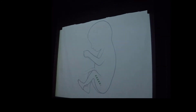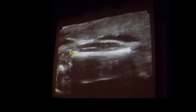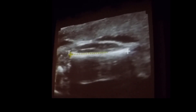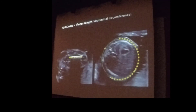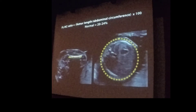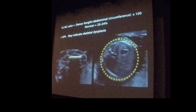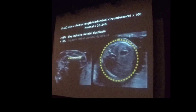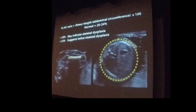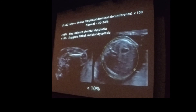The femur is measured along its shaft. The femur length is measured from diaphysis to diaphysis along the long axis of the shaft; only the ossified portions are measured. The ratio of femur length to abdominal circumference normally ranges from 20 to 24%. If the ratio is below 18%, this may indicate a skeletal dysplasia, and a ratio below 16% in the setting of other skeletal abnormalities suggests a lethal skeletal dysplasia. In a 21-week fetus with a lethal skeletal dysplasia, the ratio measured below 10%.